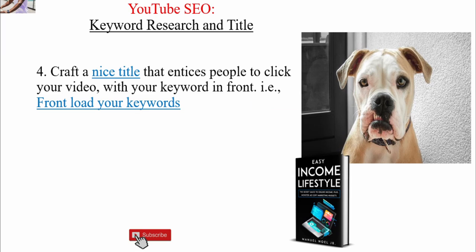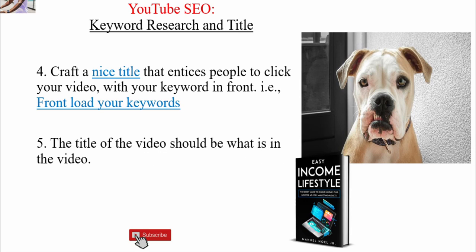Number four on how to do YouTube SEO: craft a nice title that entices people to click your videos, with the keyword in front — what's called a frontal keyword. So if my keyword is 'cameras for YouTube videos,' always start your title with that keyword and then write something else after it. Number five: the title of your video should reflect what is actually in the video. Don't have a title about one thing and talk about something completely different. If you have a title about dogs but talk about cameras, people won't resonate and they'll leave your video. Always make the title highly relevant to what you're talking about in the video.